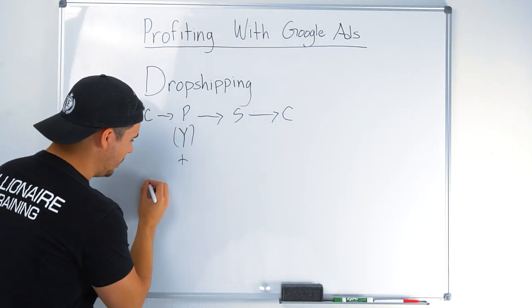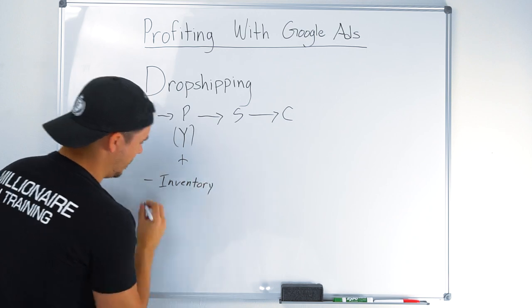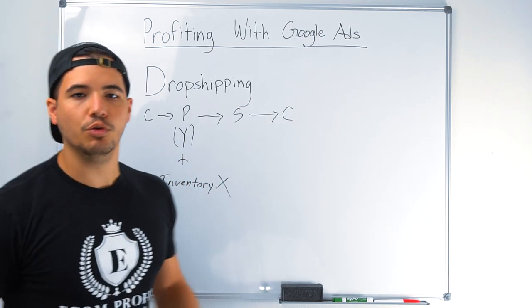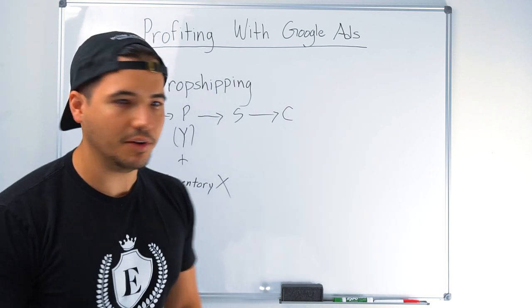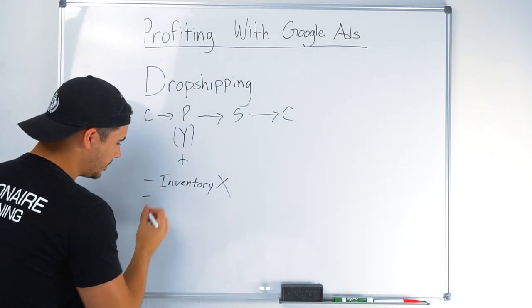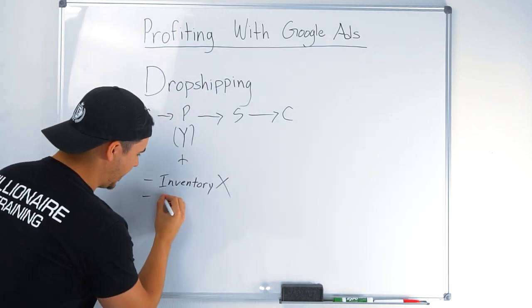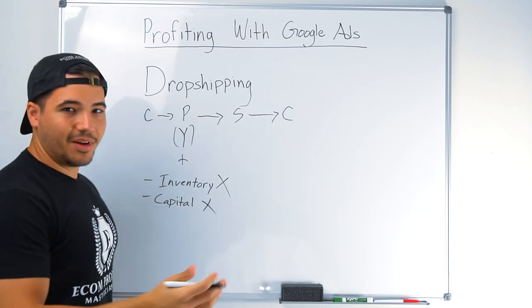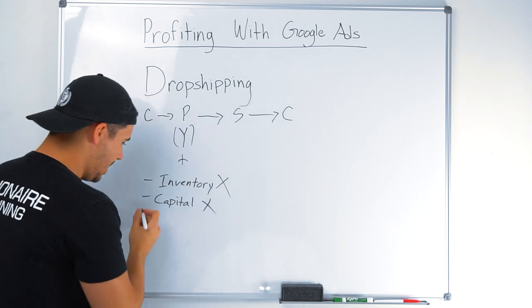You have no inventory—zero inventory. You don't need huge overhead, you don't need a lot of capital to start off. You don't need a warehouse, you don't need anything like that. On top of that, you don't even see the product.